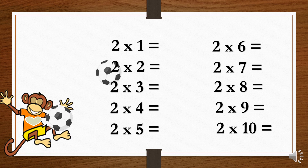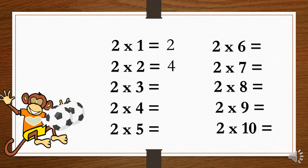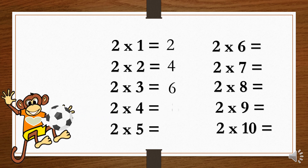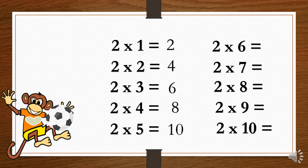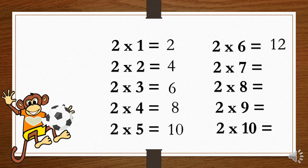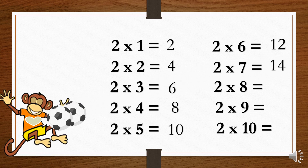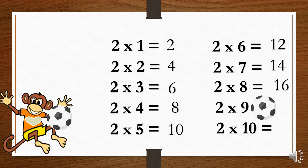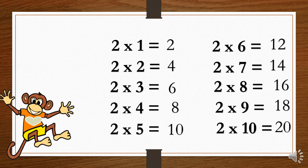2×1=2. 2×2=4. 2×3=6. 2×4=8. 2×5=10. 2×6=12. 2×7=14. 2×8=16. 2×9=18. 2×10=20.